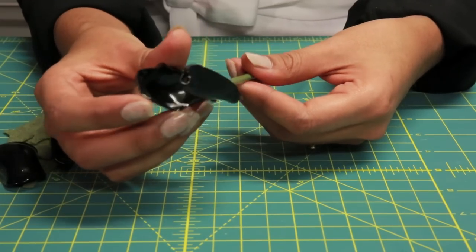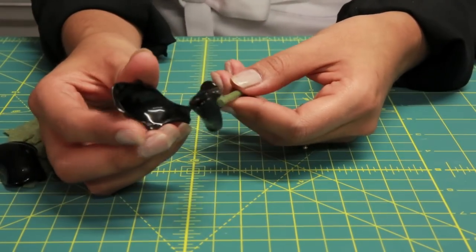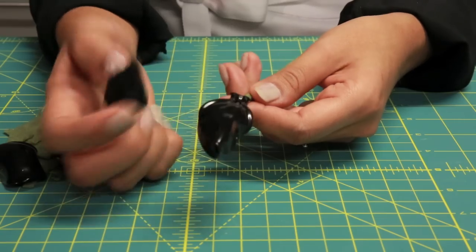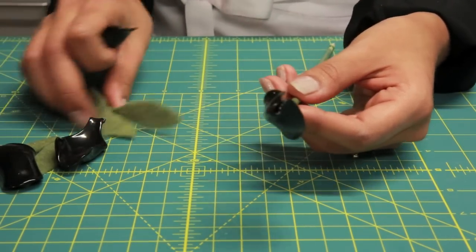Work your way around the entire thing, gluing on the rest of your petals. And don't worry if it's messy or if they're poking out at the bottom, because you're going to cover the bottom with these petals.